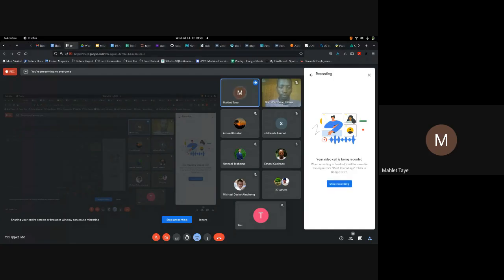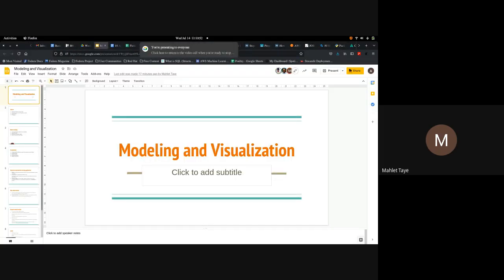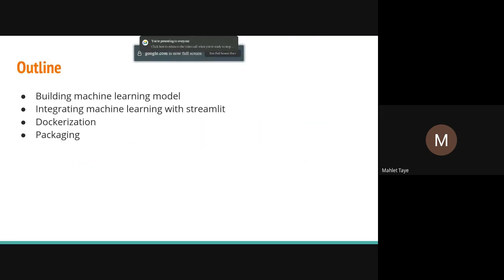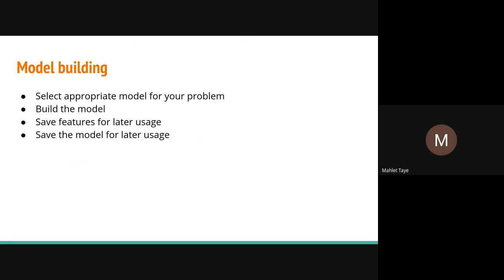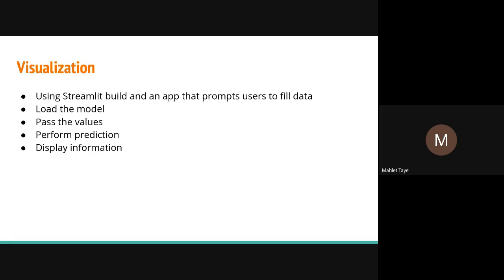After proper data cleaning and data engineering exploration, the next step is to build your model. For the model building part, you need to have certain specific features which you have determined are most informative for the dependent variable — the one which you are going to predict. Let us see the notebook I have for this session.